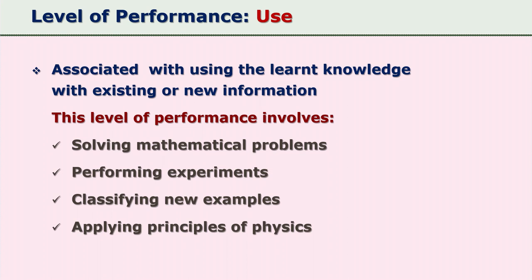Another example: if a learner has learned how to construct a triangle and then follows that same process to construct different kinds of triangles with different measurements, the learner is using previously learned knowledge. Cognitive activities at the 'use' level include solving mathematical problems, performing experiments, classifying new examples, and applying principles of physics or chemistry to solve problems.